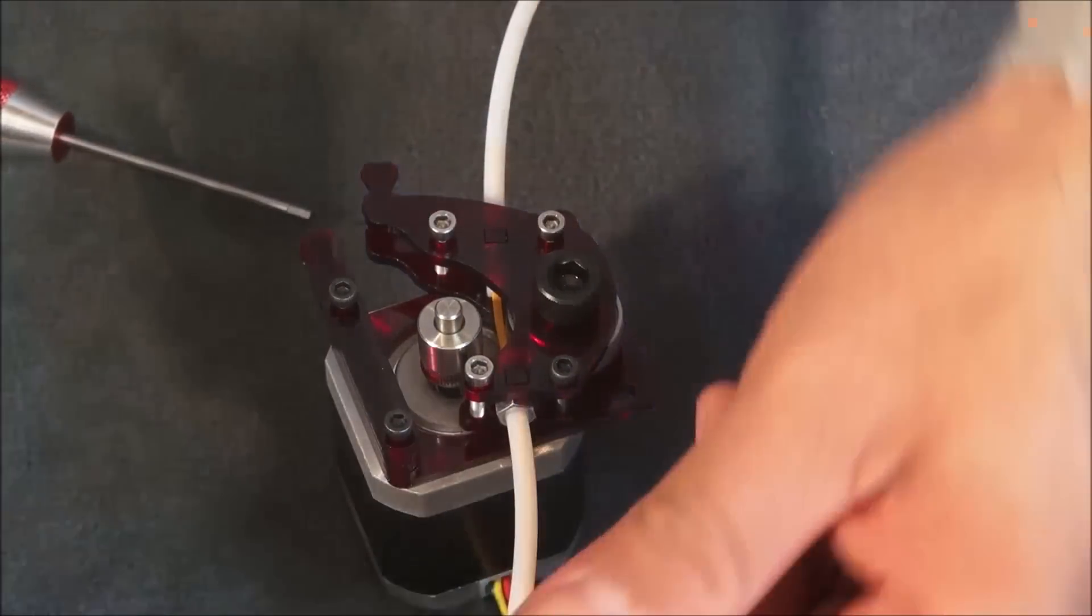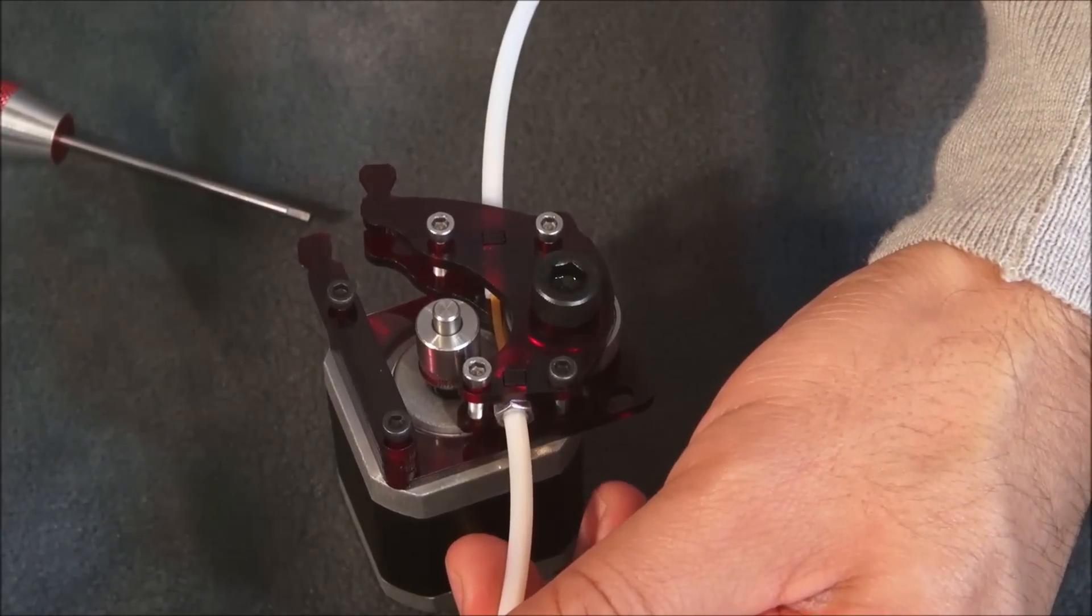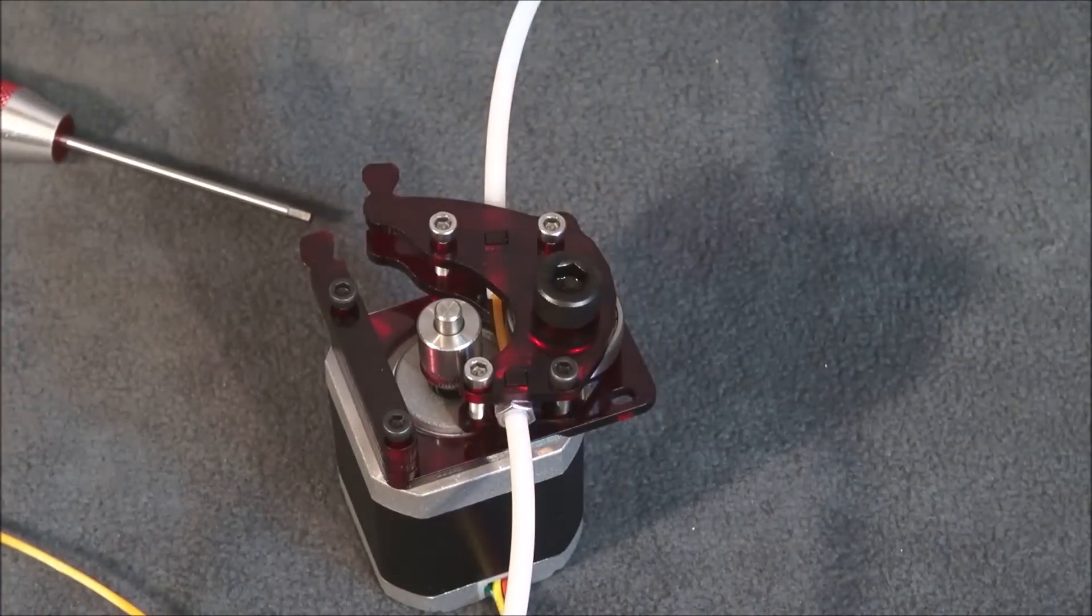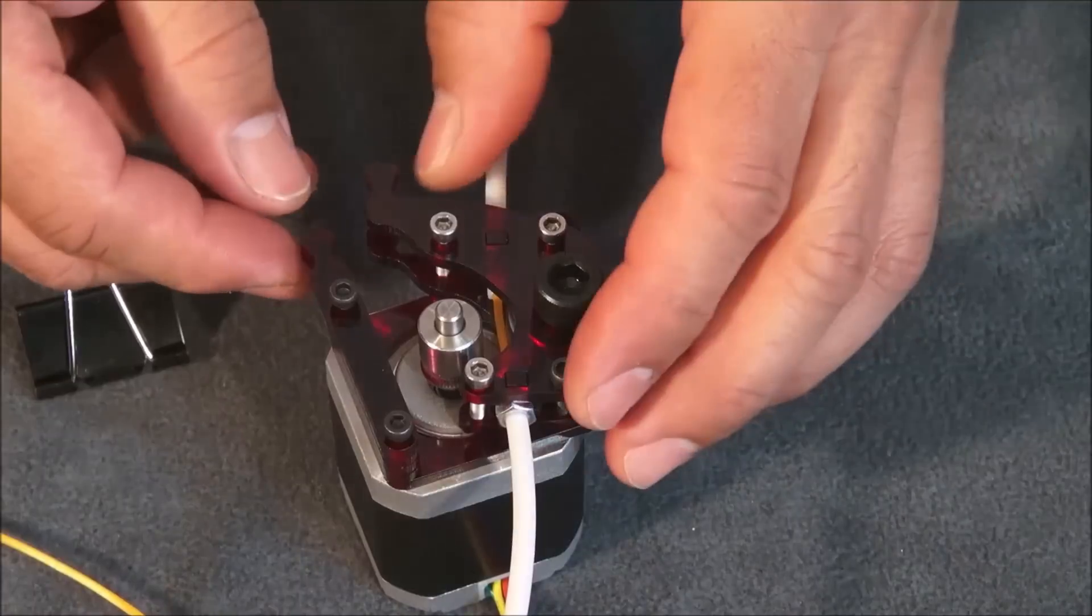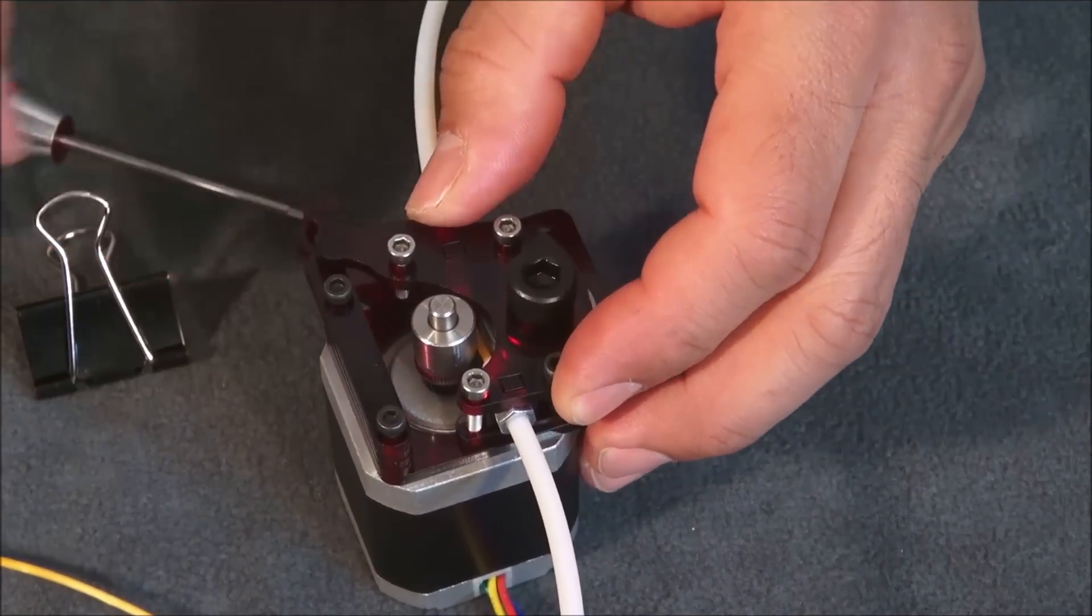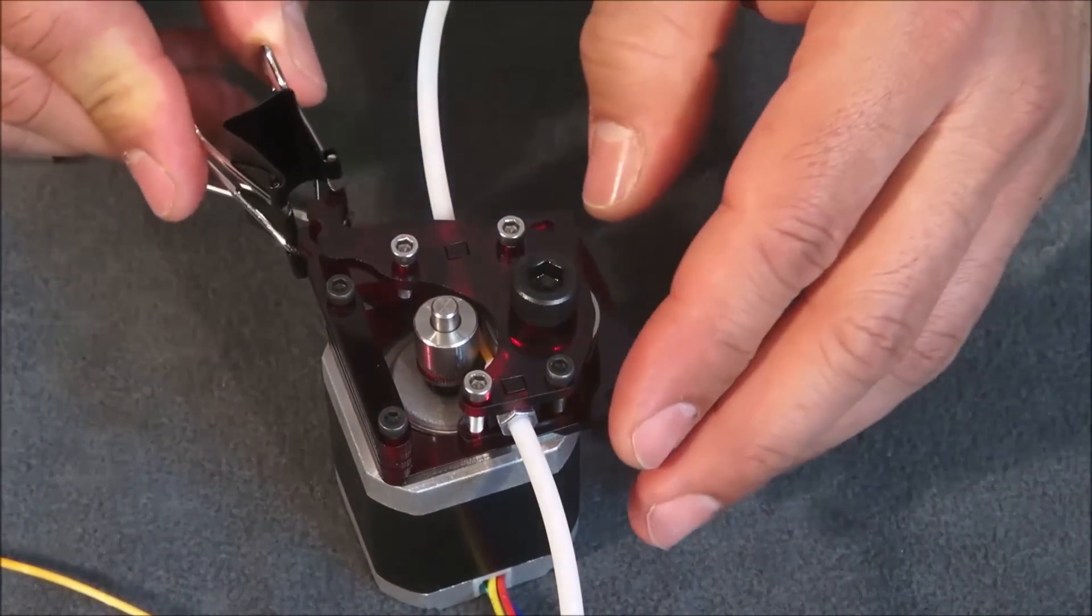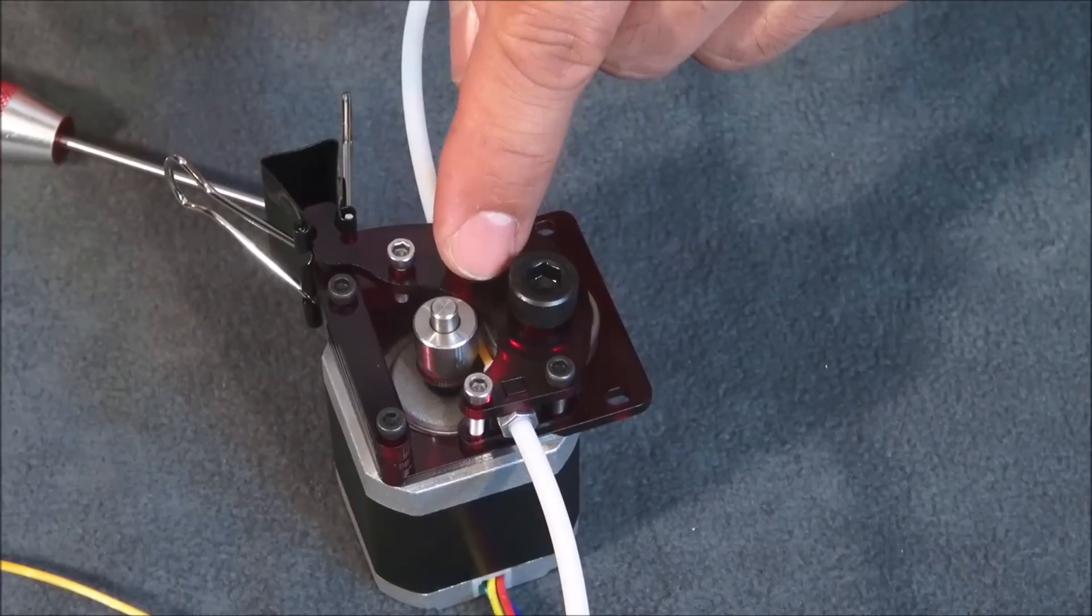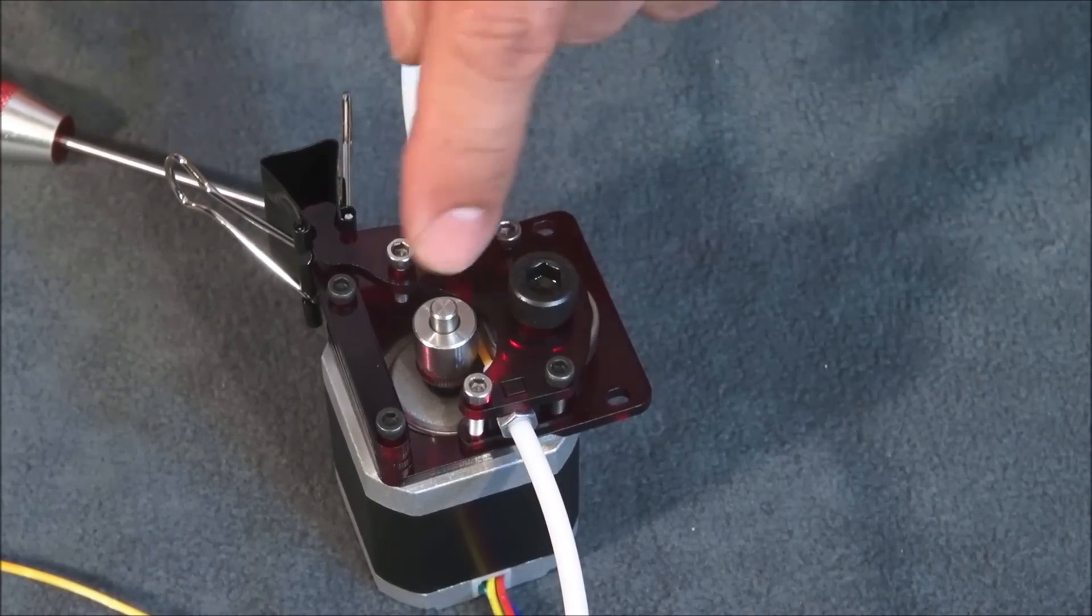Now we're going to test some filament through it. You want to make sure your filament flows through. The final step, you would utilize one of the clips provided to apply pressure to your filament along the ball bearing and the teeth, making sure your teeth are aligned right along with your filament.